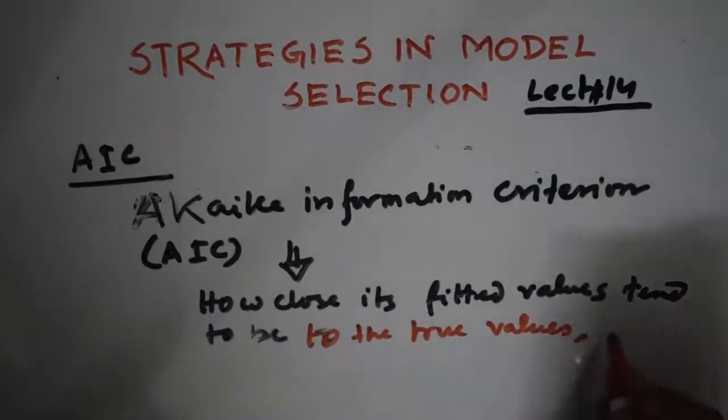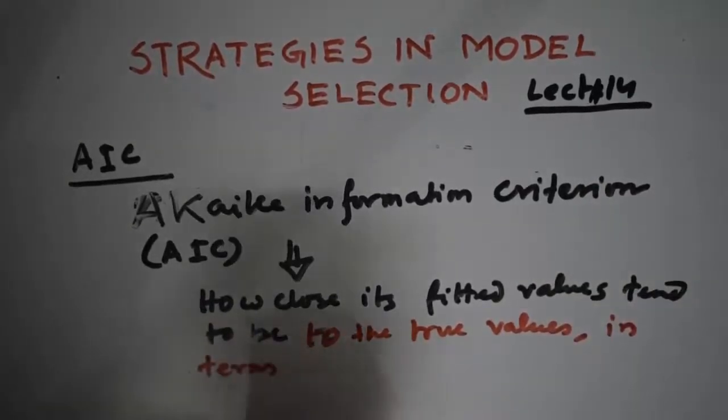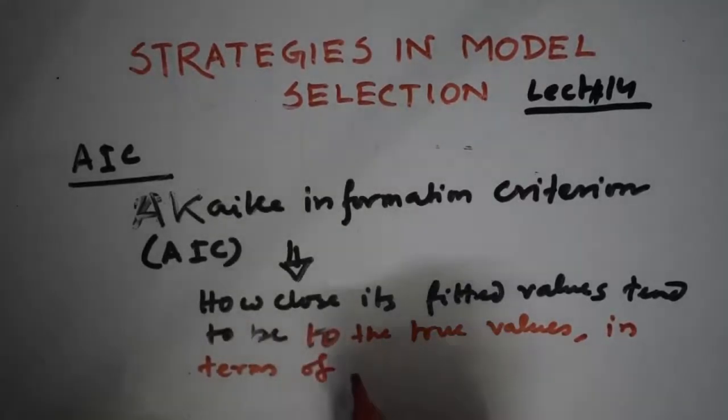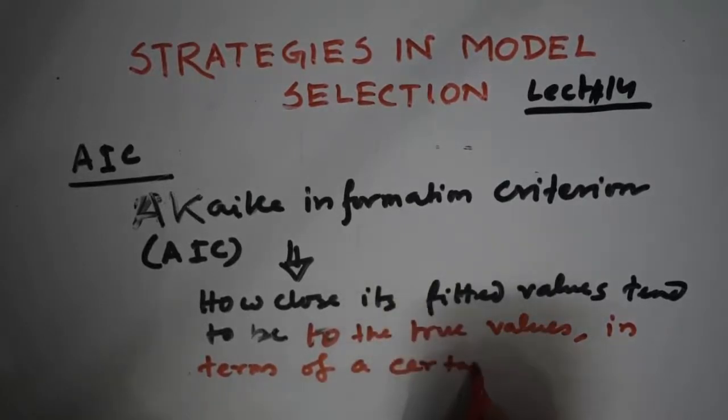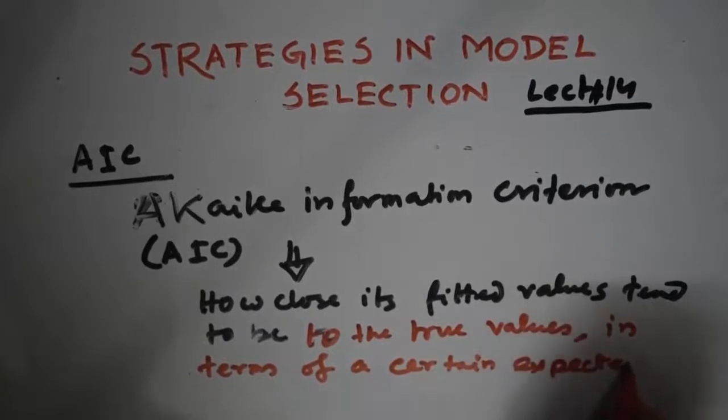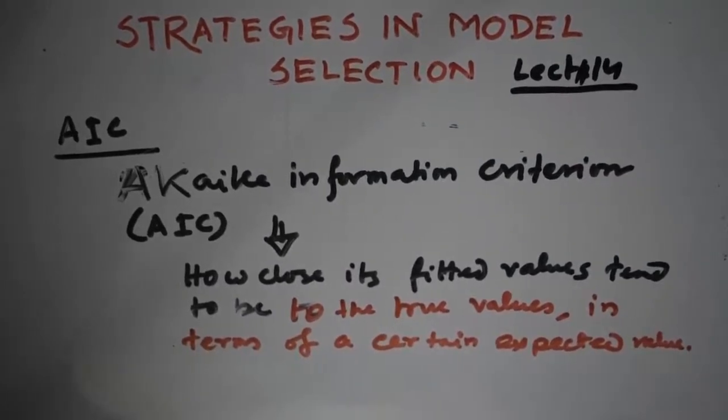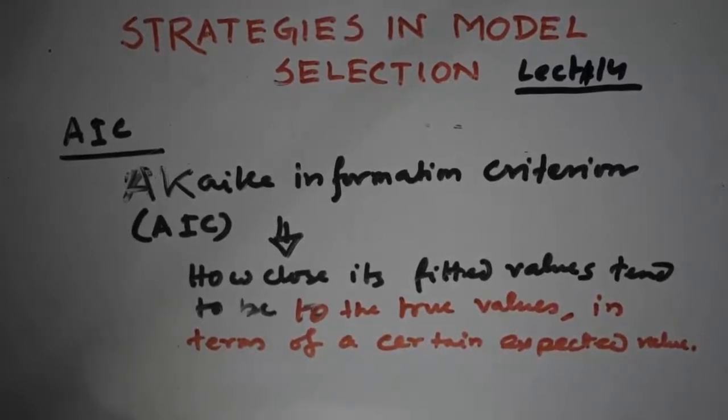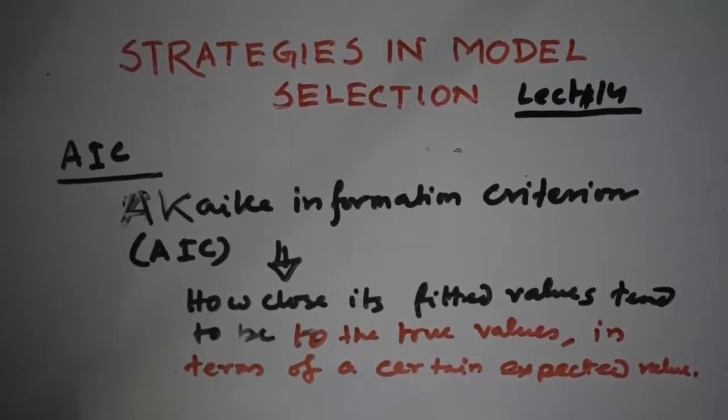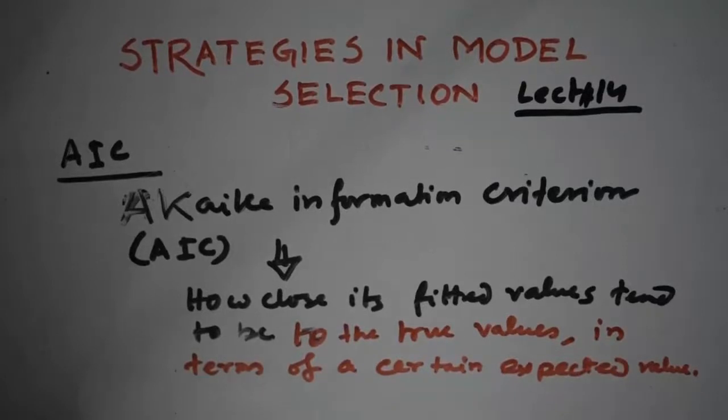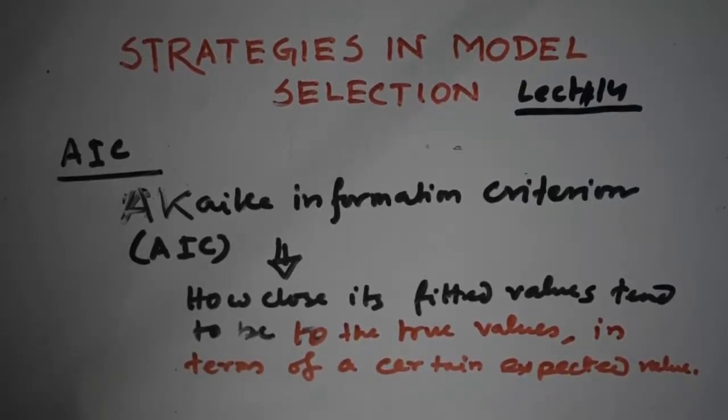In terms of a certain expected value, even though a simple model is further from the true model than is a more complex model, it may be preferred because it tends to provide better estimates of certain characteristics of the true model, such as cell probabilities.